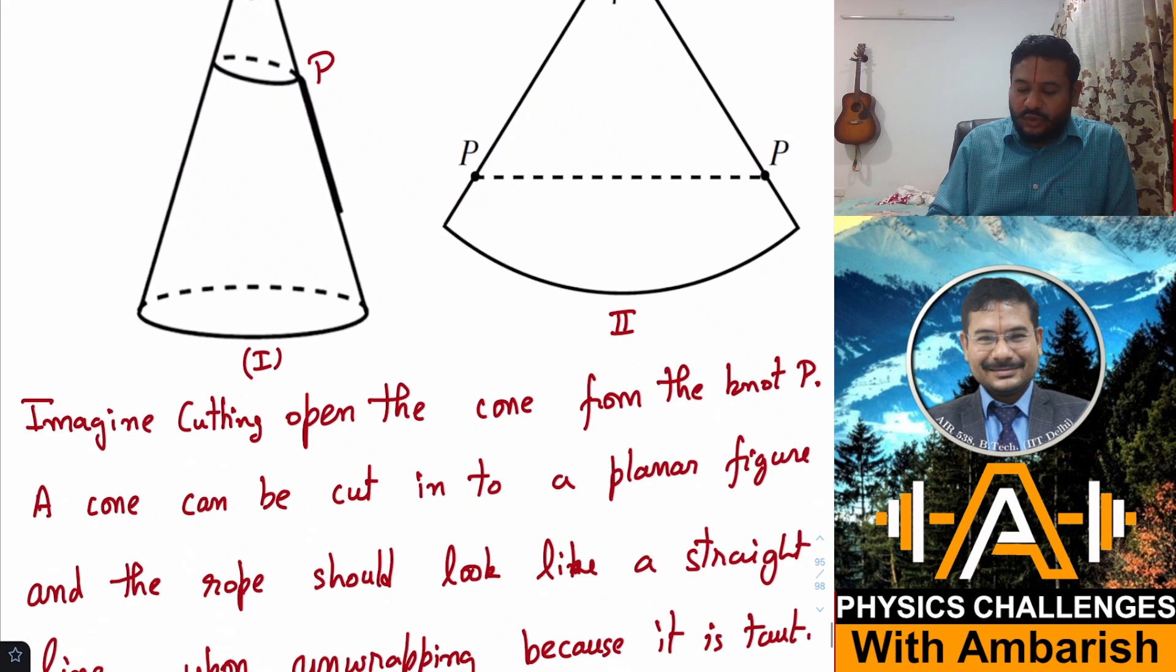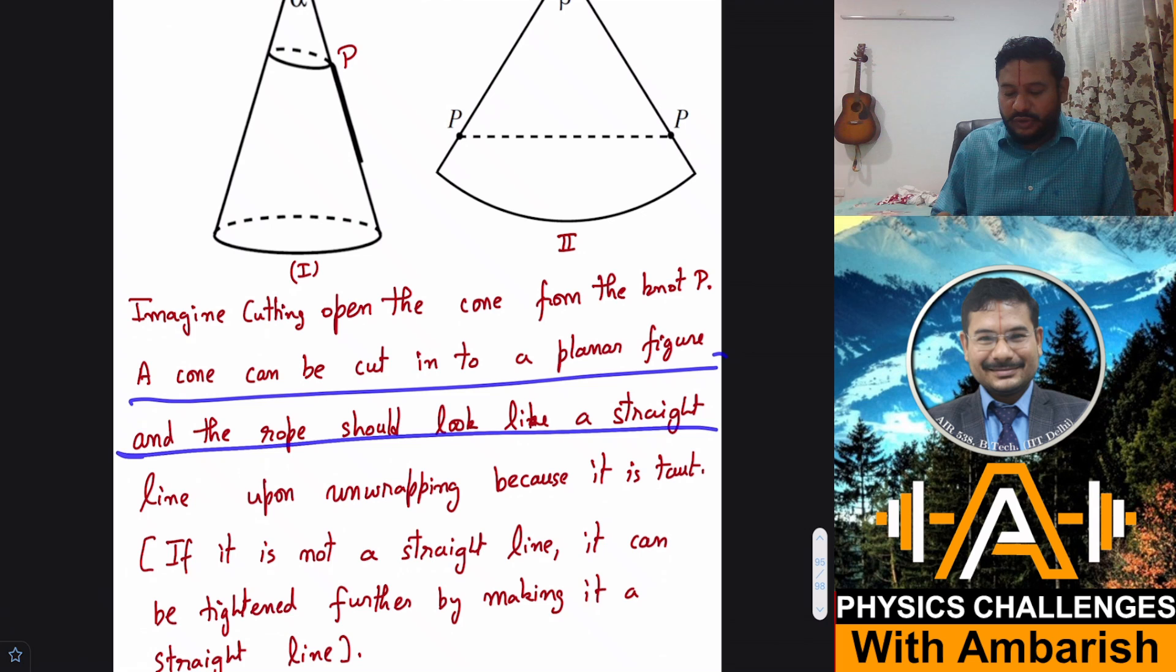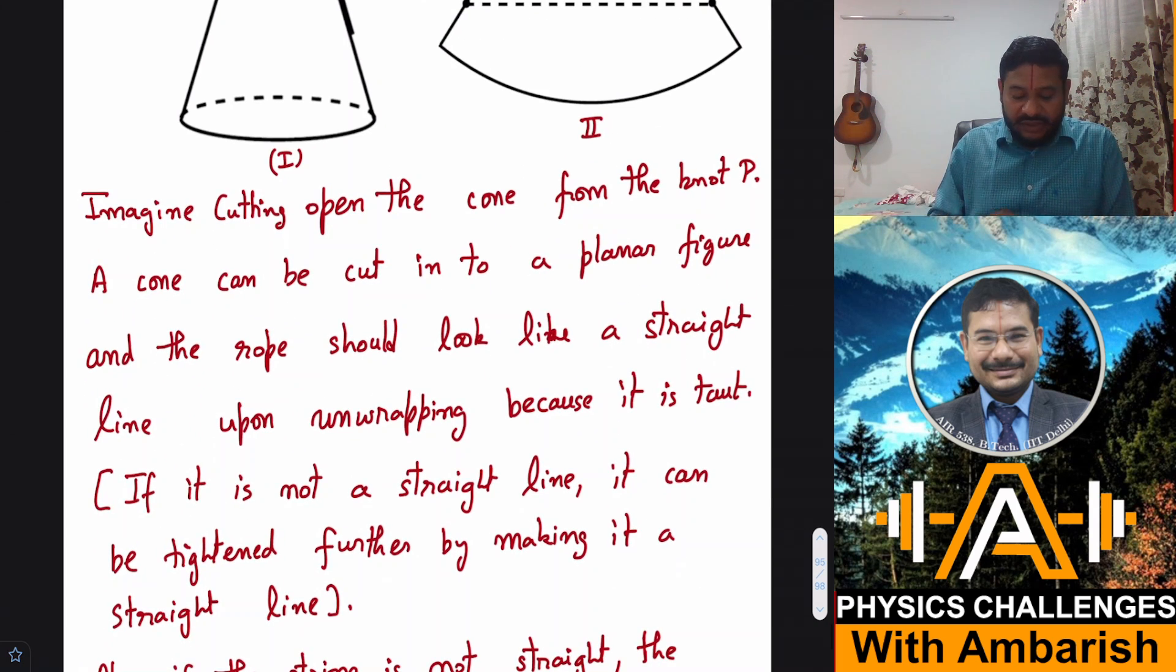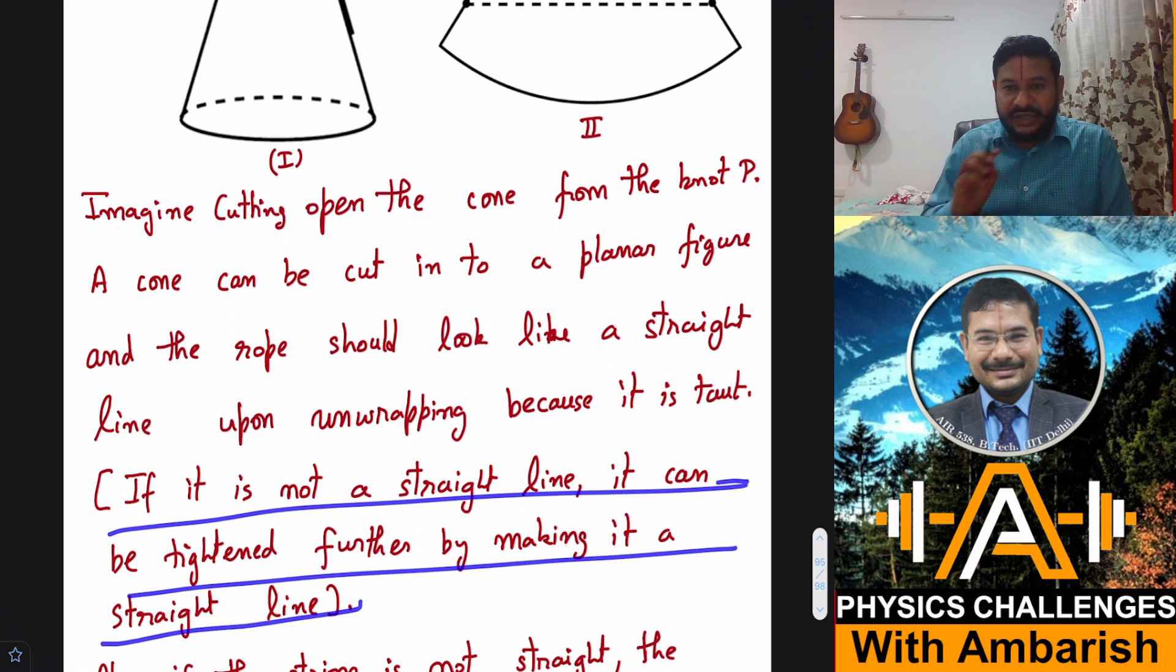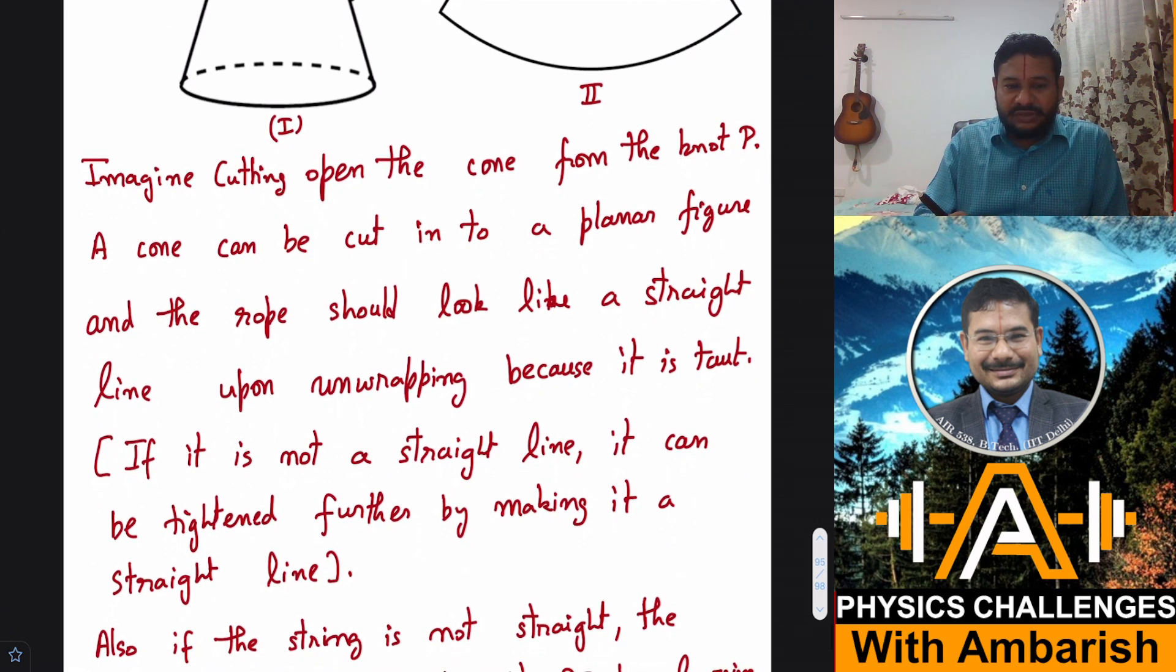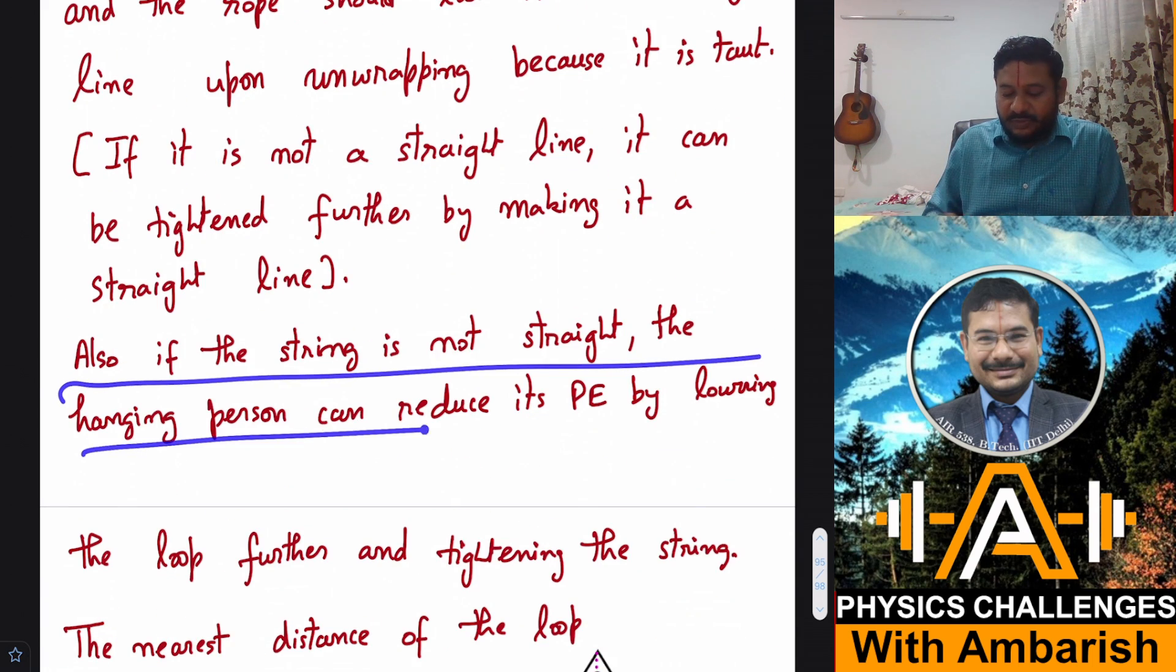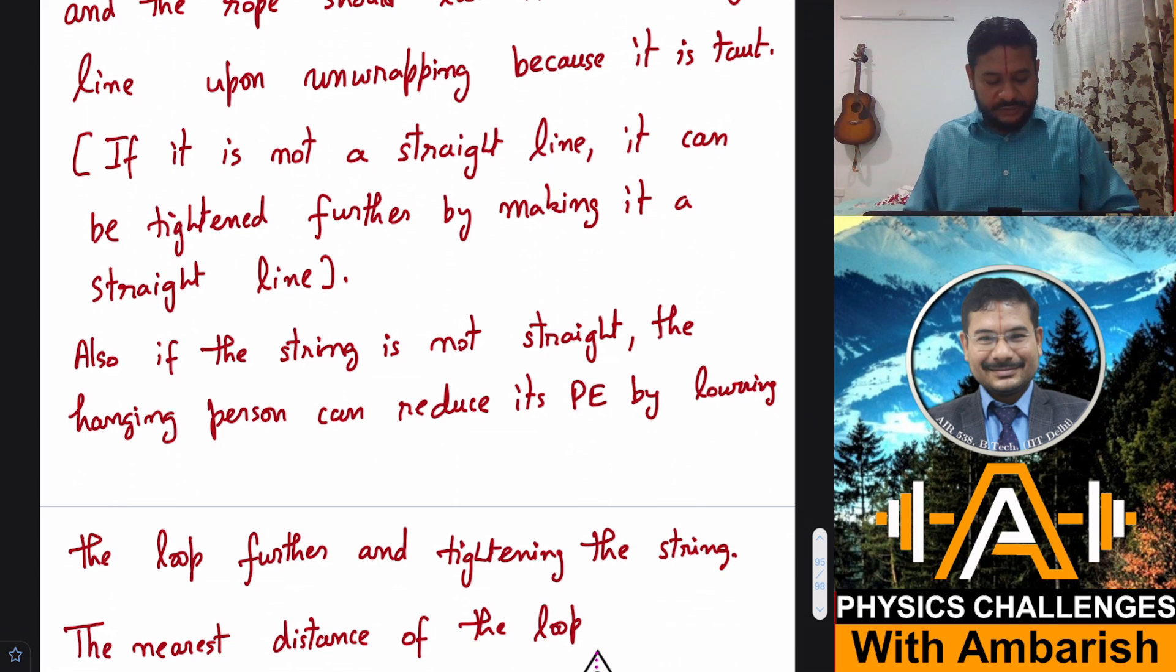So imagine cutting open the cone from the knot P, a cone can be cut into a planar figure and the rope should look like a straight line upon unwrapping because it is taut. If it is not a straight line, it can be tightened further by making it a straight line. So that if it is not a straight line, the tension must be zero. Also, if the string is not straight, the hanging person can reduce its potential energy by lowering the loop further and tightening the string as I explained to you just now.